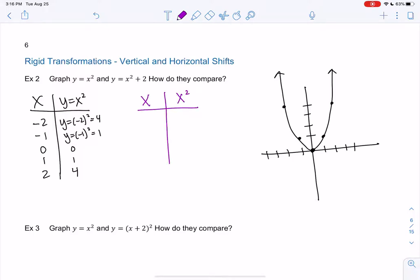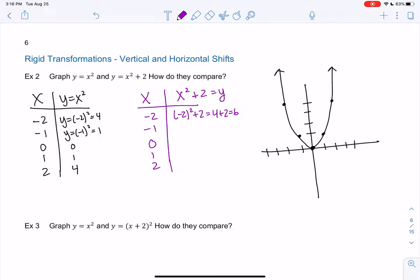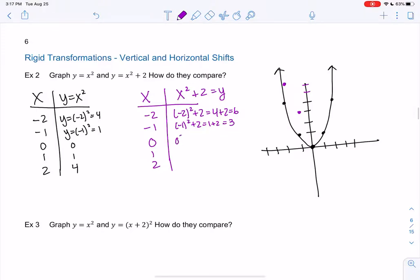Let's see what happens if I do x squared plus 2. So I'm going to plug in the same points, but if I do x squared plus 2, I get negative 2 squared plus 2. So what's that? We get 4 plus 2 or 6. So negative 2 and 6. There's 6. Negative 1 squared plus 2 gives me 1 plus 2 or 3. So negative 1 and 3.